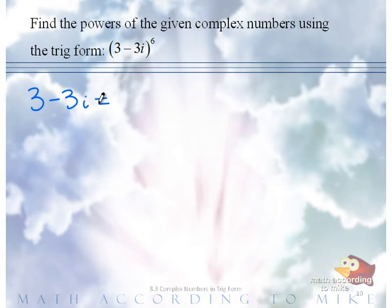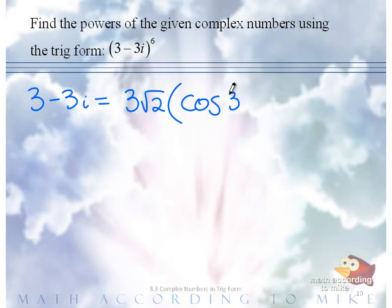What is 3 minus 3i in trigonometric form? 3 square root of 2 times cosine of, yeah, we can go degrees, plus i sine.